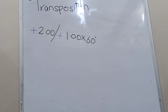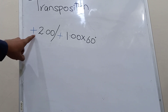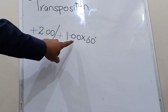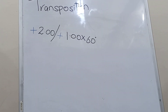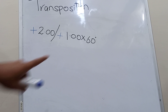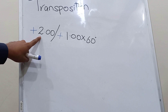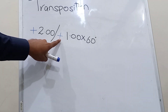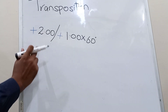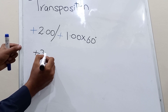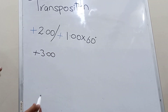Now we will discuss different examples of simple or formal transposition. In the first example, the toric prescription has a plus spherical correction and a plus cylindrical correction, and the axis of the cylinder is 60 degrees. The first step is to add the cylinder into the sphere algebraically. Both values carry a plus sign, so we add them and the resultant value is plus 3. That completes our first step.